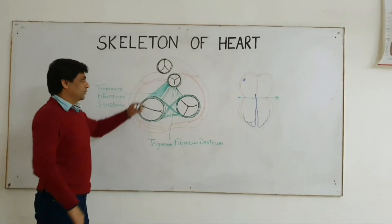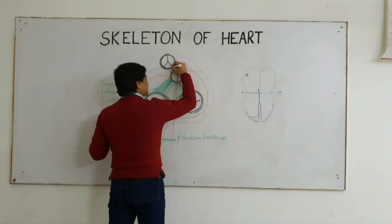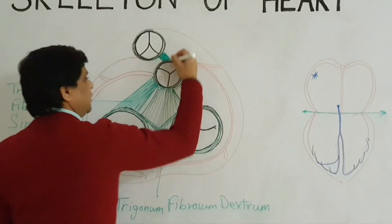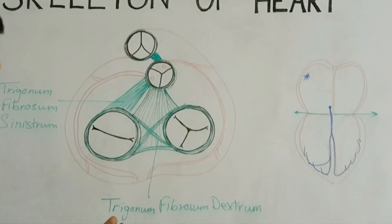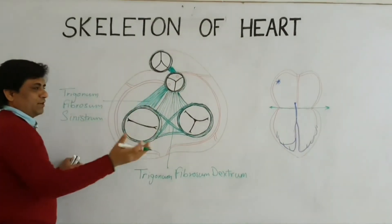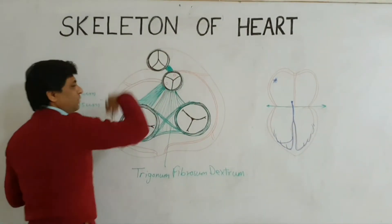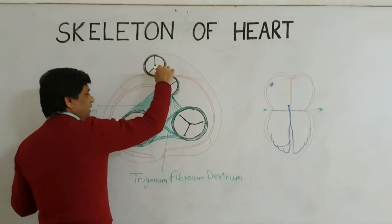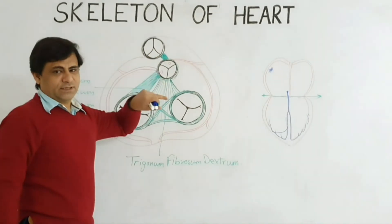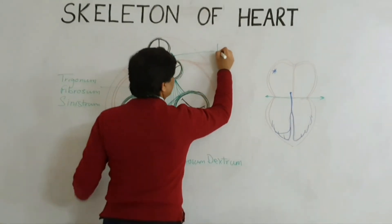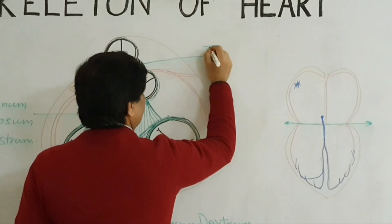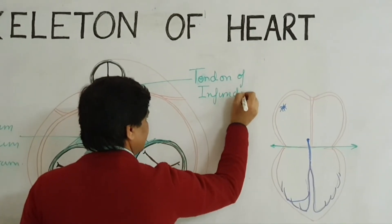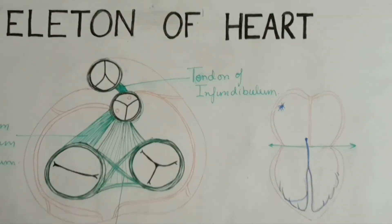For holding and providing support to the pulmonary valve, there is an additional band which connects the infundibulum — the outflow tract of the right ventricle, which continues as the pulmonary trunk. Between the infundibulum and the commencement of the pulmonary trunk, you find the pulmonary valve. At the level of this pulmonary valve, on the infundibulum posteriorly, there is a fibrous band which connects this to the aortic ring, and this is called the tendon of the infundibulum.